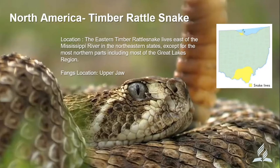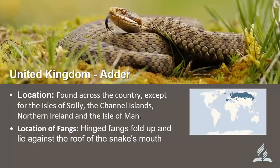For the United Kingdom area, the adder is the most venomous snake found in that region, occurring across the country except for the Isles of Scilly, Channel Islands, Northern Ireland, and the Isle of Man. Its fangs fold up against the roof of the upper jaw. The adder is classified as nearly fourth on the list of the animal kingdom when it comes to venom potency — so be very careful where you put your feet in woodland areas.